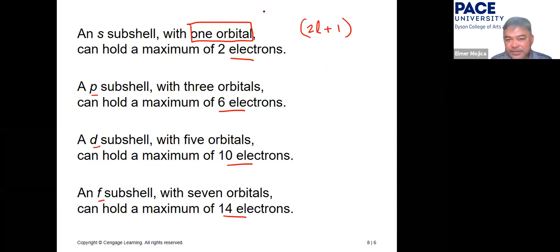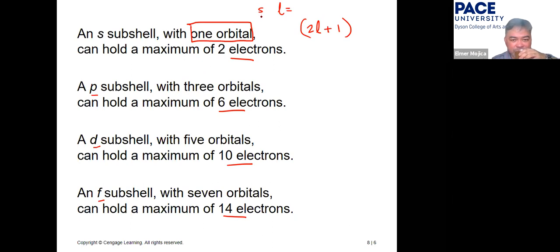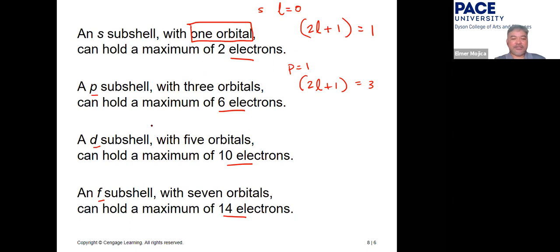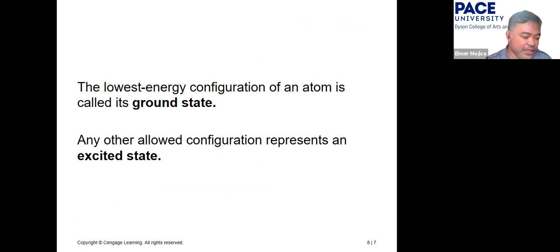The number of orbitals equals 2l + 1. For s, l = 0, so that's one orbital. For p, l = 1, so 2(1)+1 = three orbitals. Multiply the number of orbitals by two to get the number of electrons in any subshell — those are the types of questions you can be given.